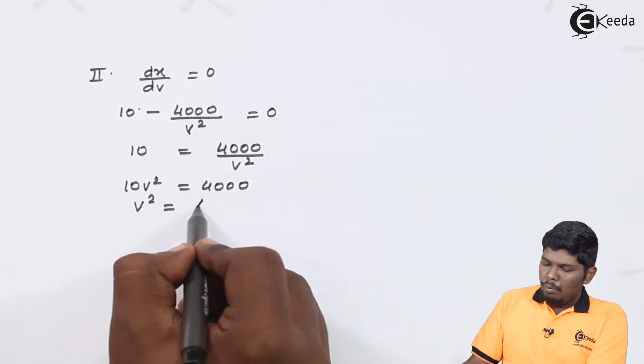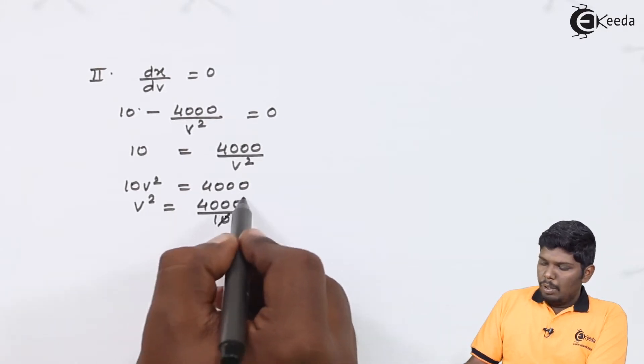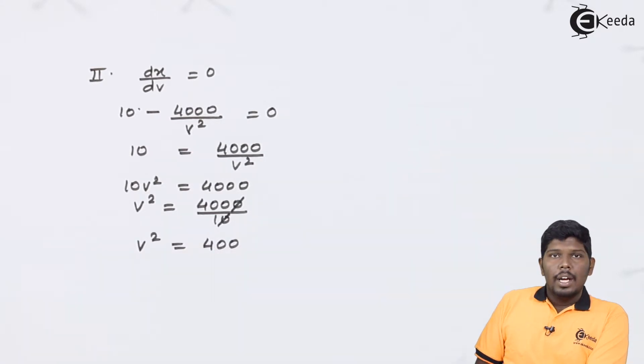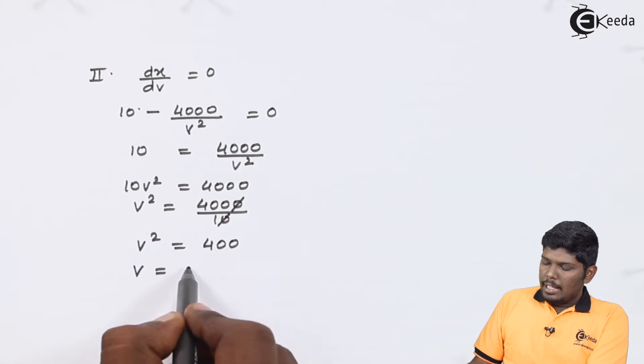Therefore, V square will give you 4000 upon 10. Zero will be cancelled and value of V square will be 400. Taking square root on both sides, we will get the value of V as 20.